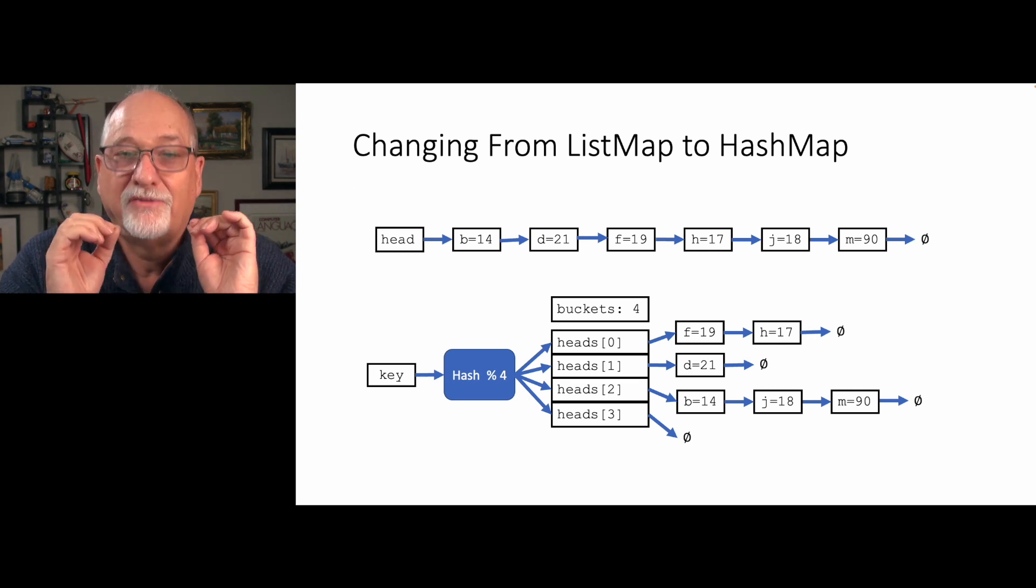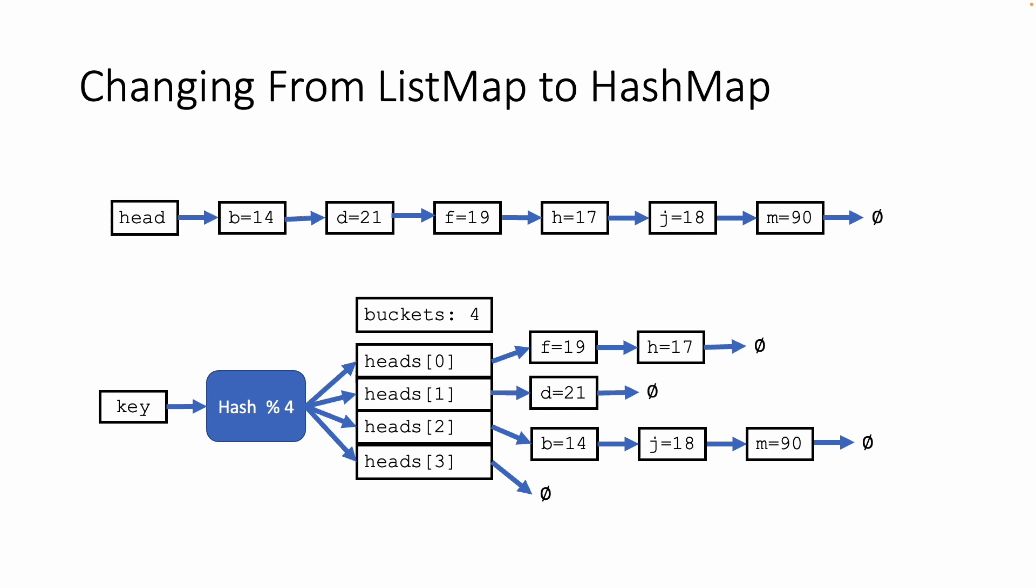A hash map with four buckets is the same as four linked lists, and you pick the linked list by the hash computation. Hash computation is deterministic and predictable.